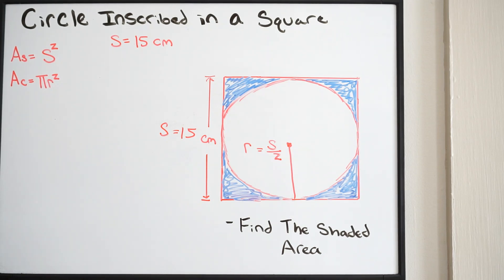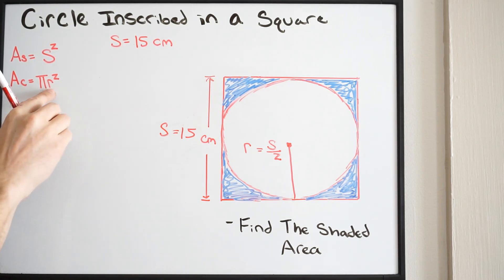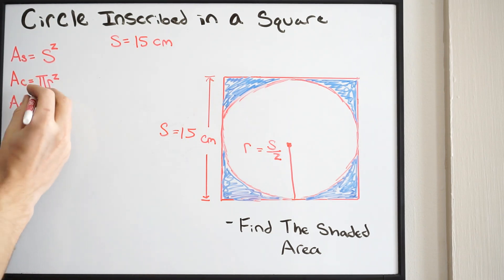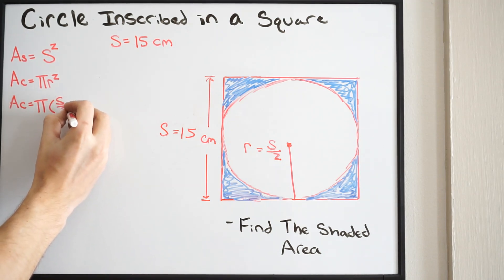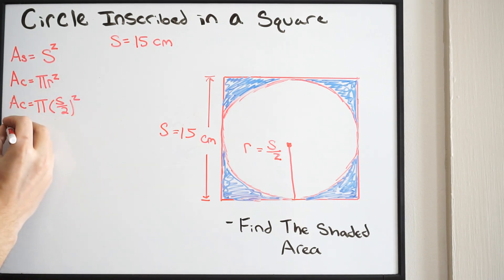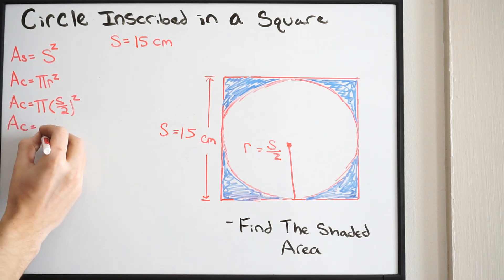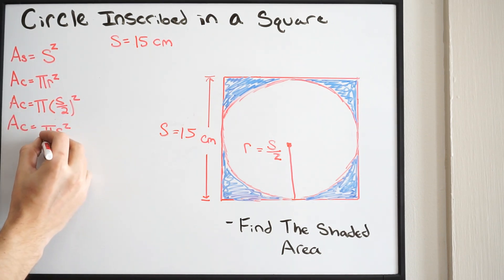So, keeping it in terms of S, we have our area of circle. We're going to plug in S over 2, so we have pi times (S over 2) squared. Cleaning this up, the area of the circle is going to be pi S squared all over 4.